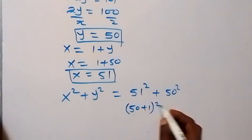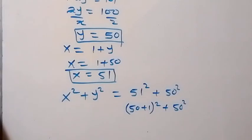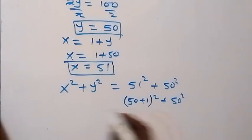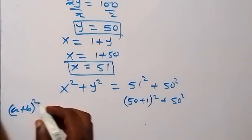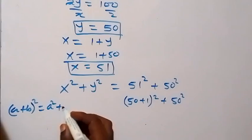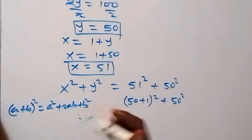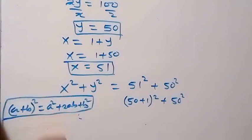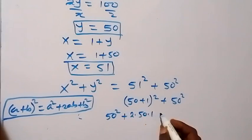plus 50². Using the identity (a+b)² = a² + 2ab + b², we get 50² + 2(50)(1) + 1² + 50².